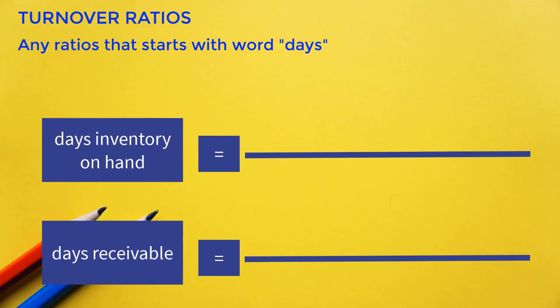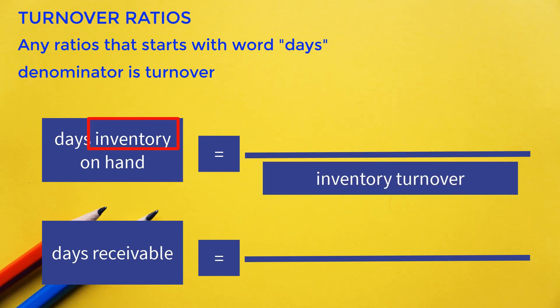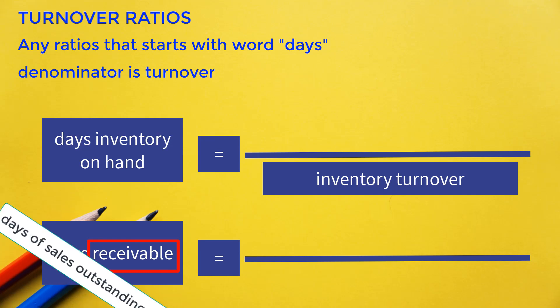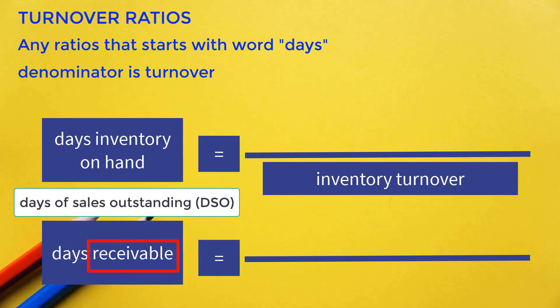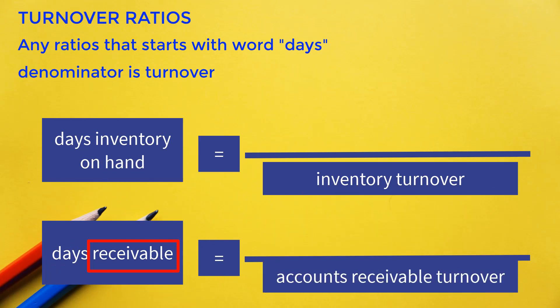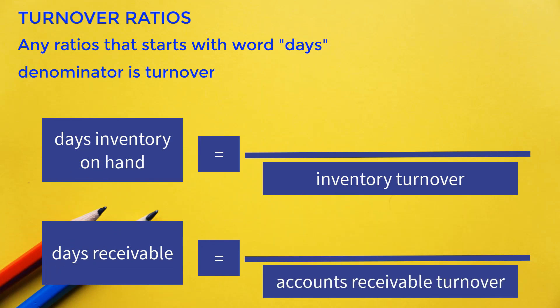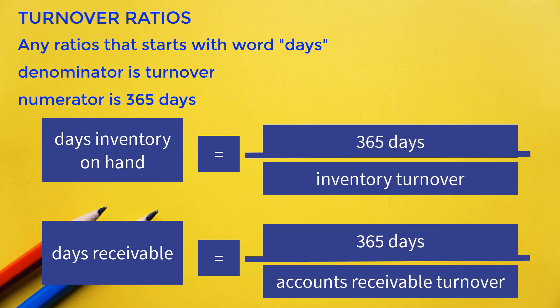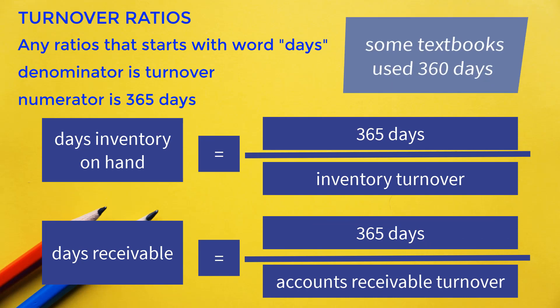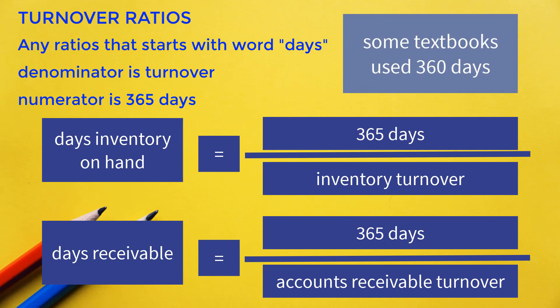For ratios that start with the word 'days,' the denominator is turnover — and which turnover depends on the name of the ratio. For days inventory on hand, the denominator is inventory turnover. For days receivable (also known as days sales outstanding, DSO, or average collection period), the denominator is receivables turnover.